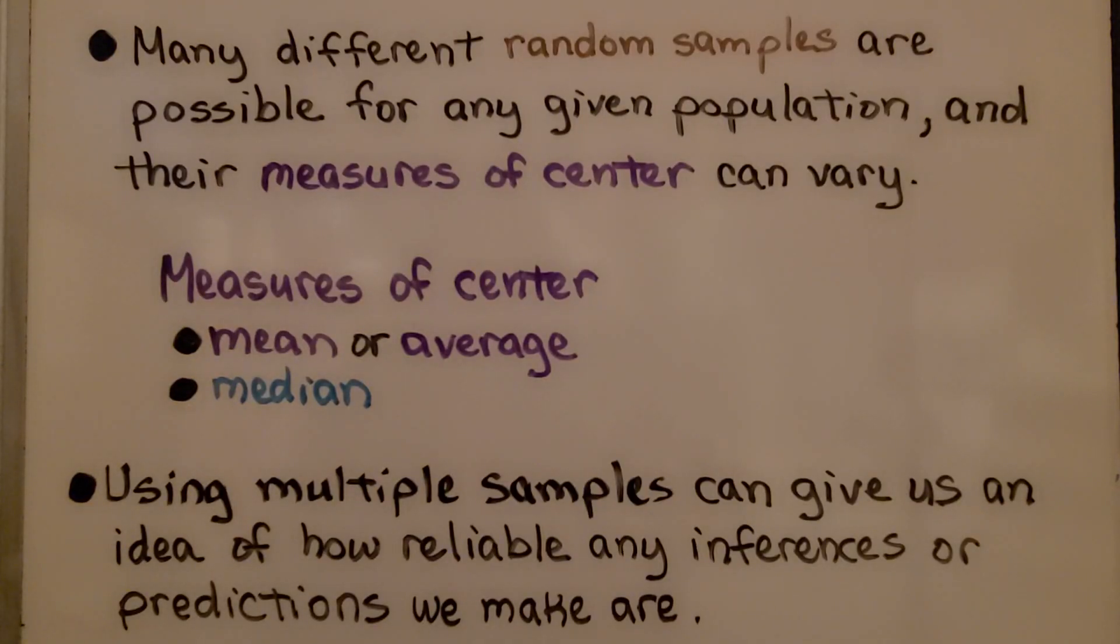Many different random samples are possible for any given population, and their measures of center can vary. So the measures of center would be the mean or average, or the median.